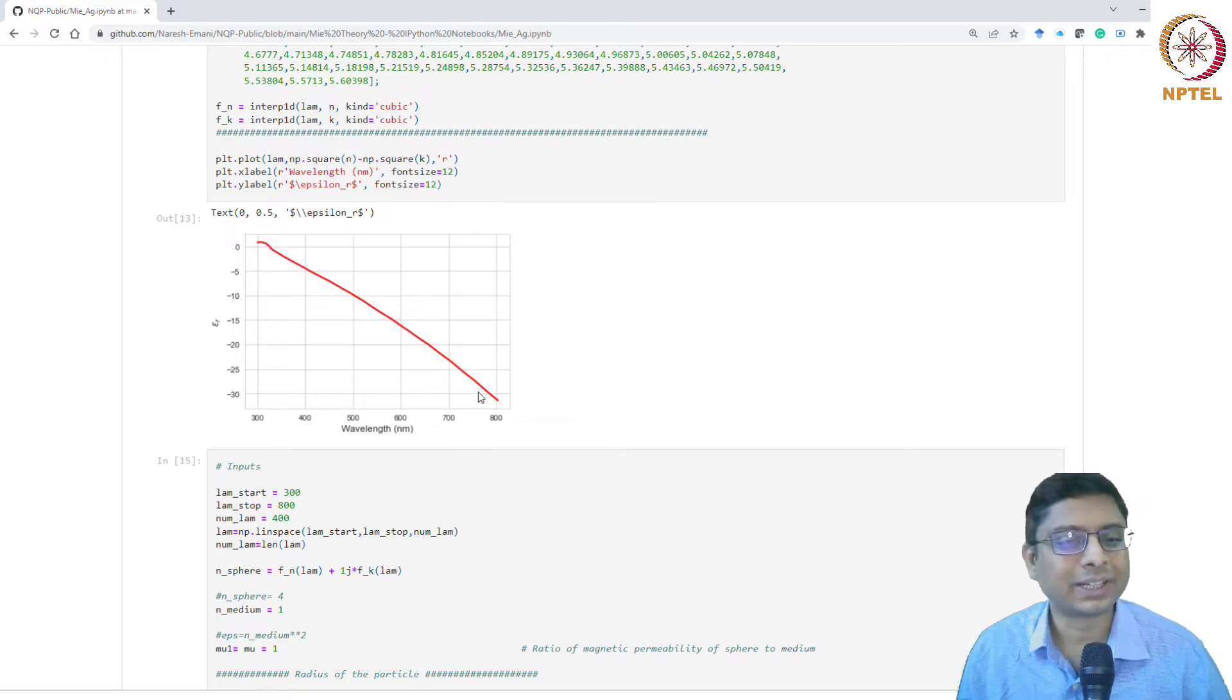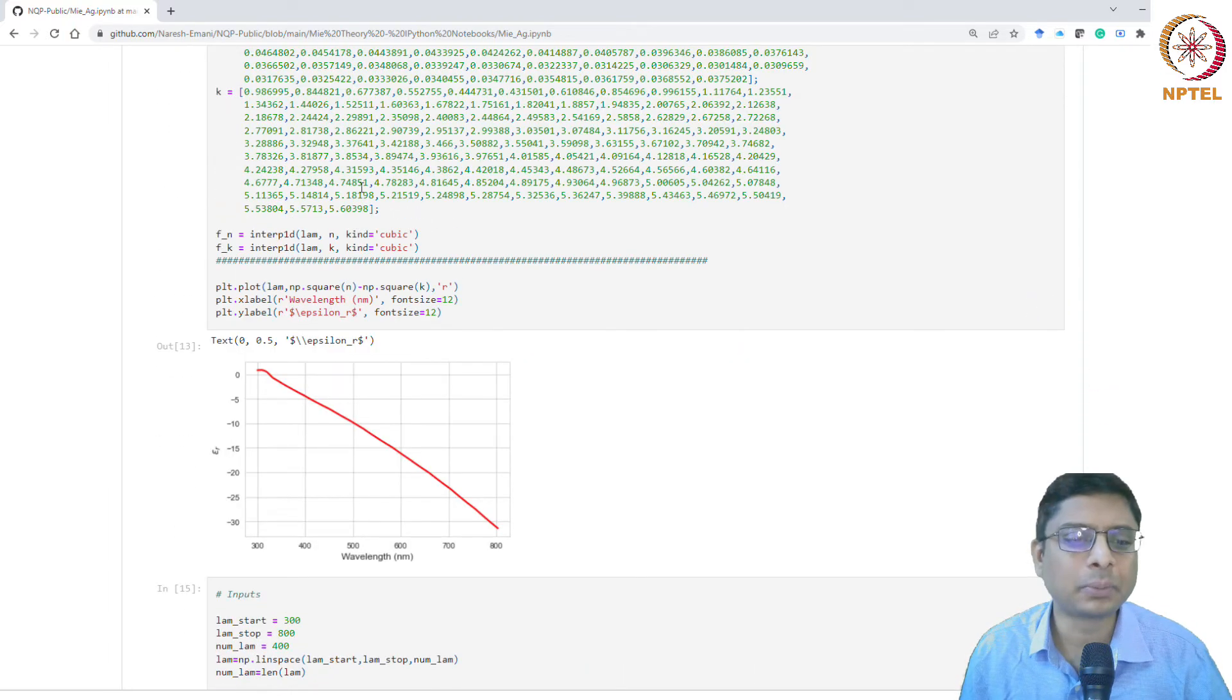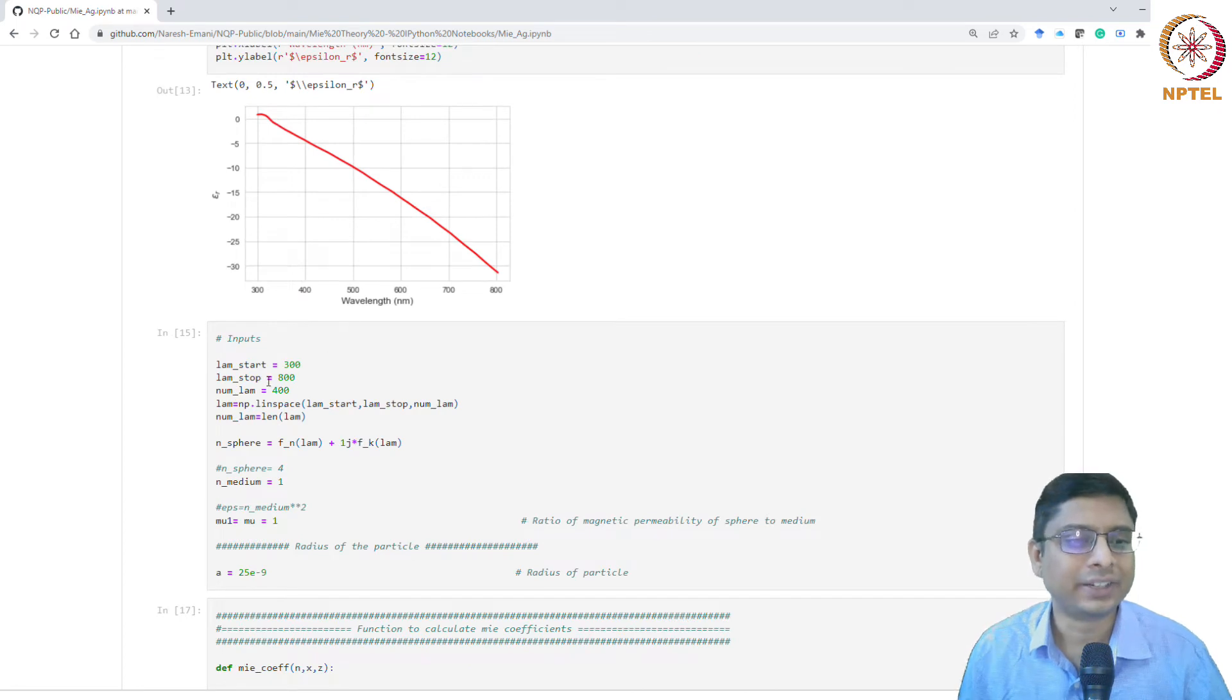We expect this is what we've seen already—for metal, above a certain frequency which is the plasma frequency it is metallic, so it's negative. At about 800 nanometers it's roughly minus 30 or minus 32 or so, negative real part. Imaginary part I haven't shown but you can compute. I've already done this here so you can plot it and check it out yourself.